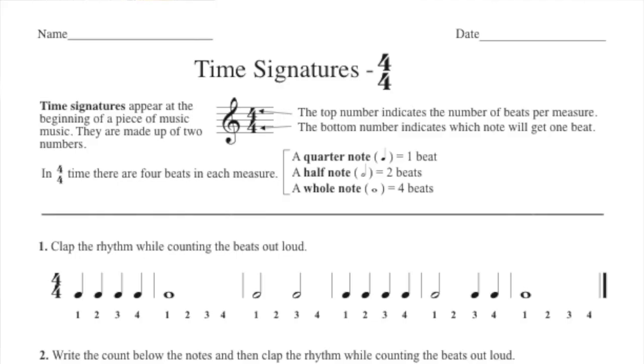In 4-4 time there are four beats in each measure just like we talked about. The quarter note gets one beat, the half note gets two beats, and the whole note gets four beats.